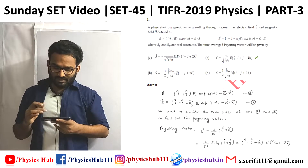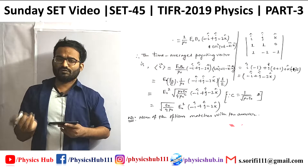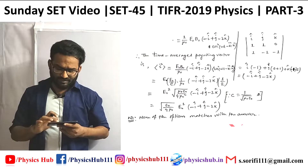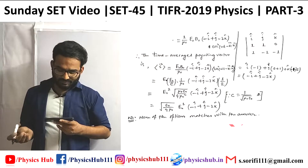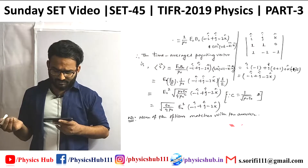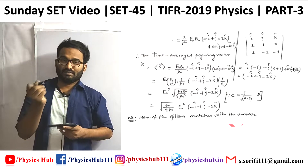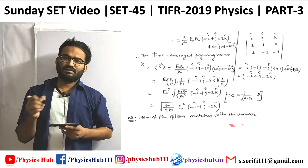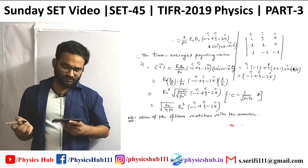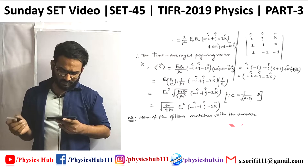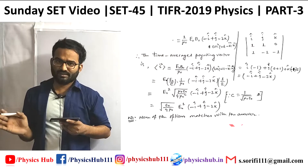Now we have to calculate the time-averaged Poynting vector. The time-averaged value of cos²(something) is one-half. Putting that value of one-half in, the cross product gives (−î + ĵ − 2k̂). Incorporating those things, and using the relation c = 1/√(μ₀ε₀), we get: √(ε₀/4μ₀) · E₀² · (−î + ĵ − 2k̂).